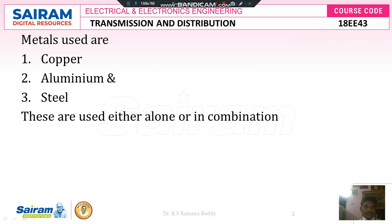In general, in order to make the conductors, the following metals are used: copper, aluminium, and steel. These are used either alone or in combination, that means as an alloy.